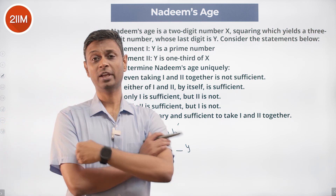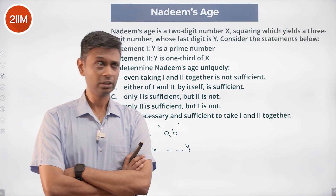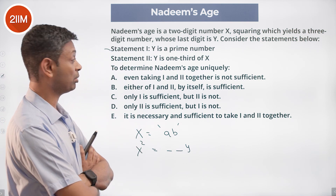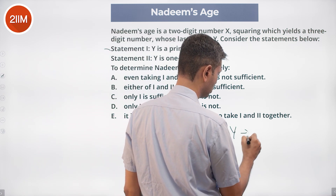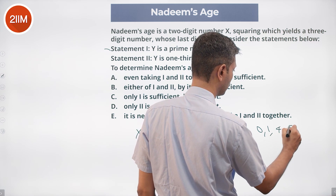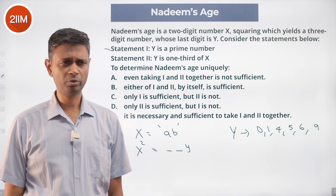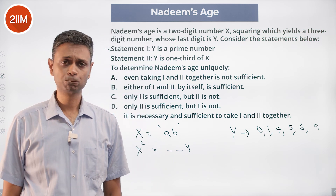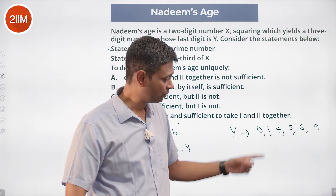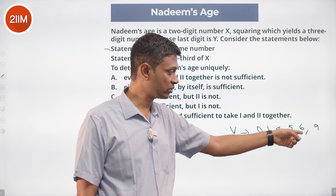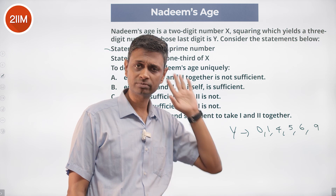X squared is a three-digit number that ends in Y. Y is a prime number. A perfect square ends in Y, so Y should be one of: 0, 1, 4, 5, 6, or 9. No perfect square ends in 2, 3, 7, or 8. Checking: 1², 2²=4, 3²=9, 4²=6, 5²=5, 6²=6, 7²=9, 8²=4, 9²=1.